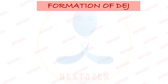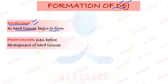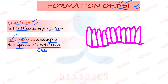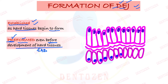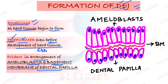Now let's see the formation of this junction. When dentine and enamel are forming, this junction gets established — these are the hard tissues. But it has been seen that this junction is pre-formed, meaning it forms even before the development of the hard tissues. Before enamel and dentine have formed, ameloblast cells on top and odontoblast cells from the dental papilla below are arranged with a curved basement membrane in between, giving evidence that the scalloped appearance is pre-formed.